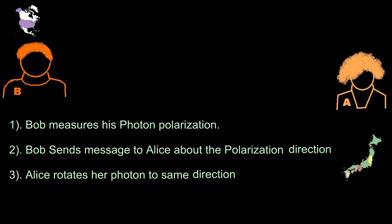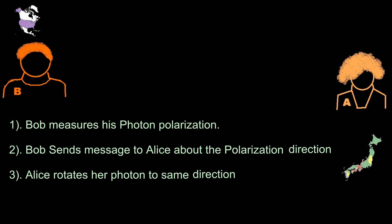There are three phases: (1) Bob measures his photon's polarization, (2) Bob sends a message to Alice about the polarization direction, and (3) Alice rotates the photon to the same direction. The third step is okay and possible — Alice can use a waveplate to change polarization and rotational states. The second step is also okay; Bob can use any method to send the measurement information. But the first step is quite difficult — actually, it is quite impossible to measure a photon's exact polarization direction.